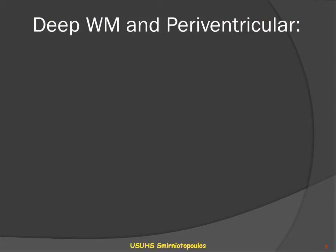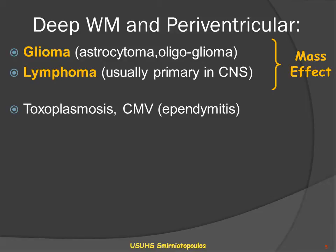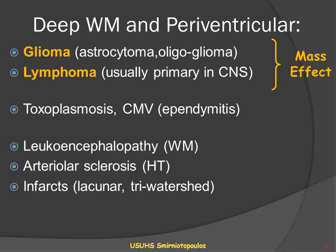Let's think a little bit more about deep white matter and periventricular lesions. Gliomas, astrocytoma, and oligoastrocytoma, and lymphoma — usually primary lymphoma in the central nervous system — are the classic lesions that expand by infiltrating the corpus callosum. Toxoplasmosis and CMV may involve the ependymal lining of the ventricle in the periventricular area, and various types of white matter disease or leukoencephalopathy, small vessel disease or arteriolar sclerosis, and infarcts that may be the result of hypertensive vascular disease may also involve the periventricular region and the corpus callosum.